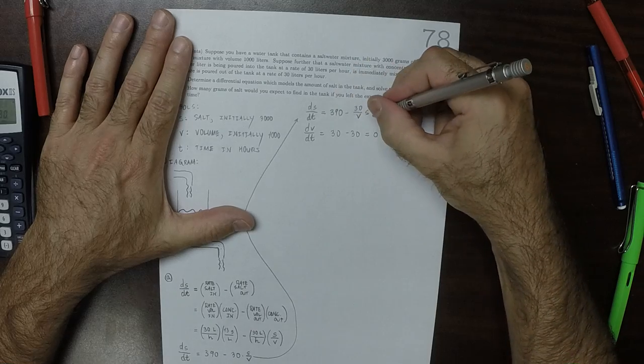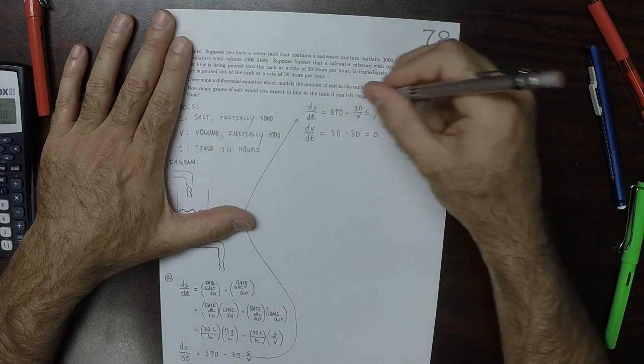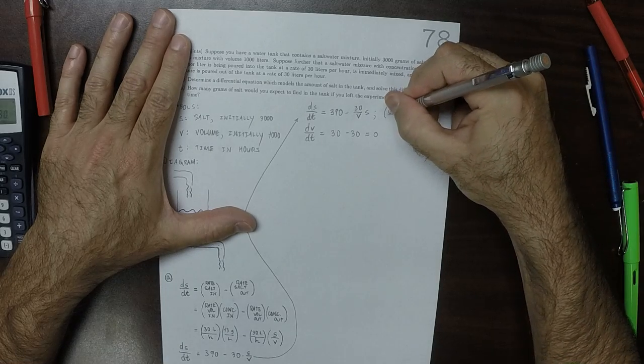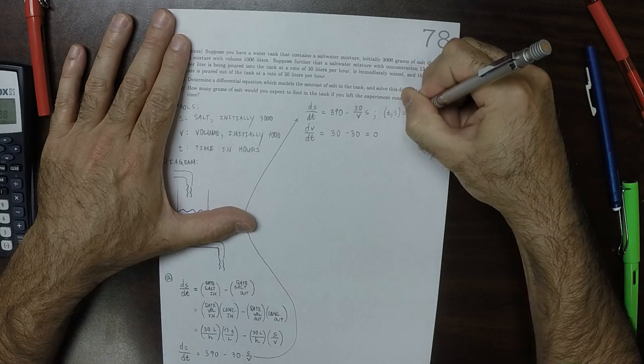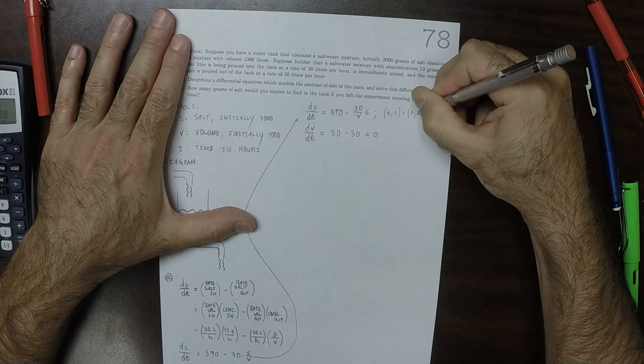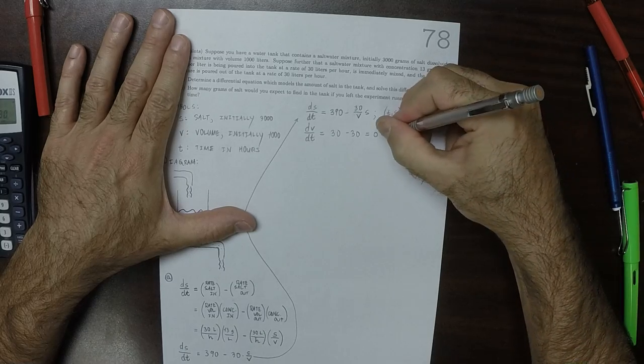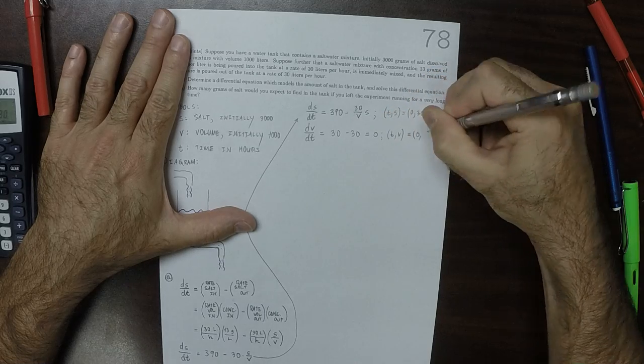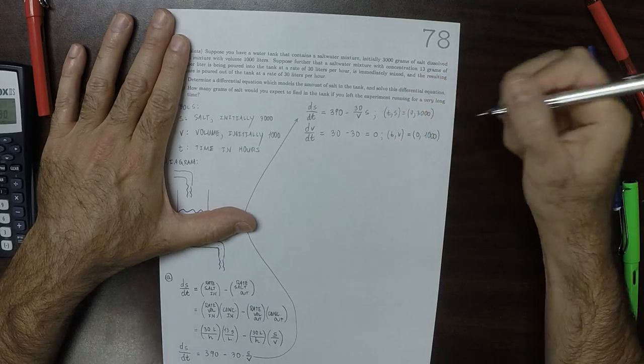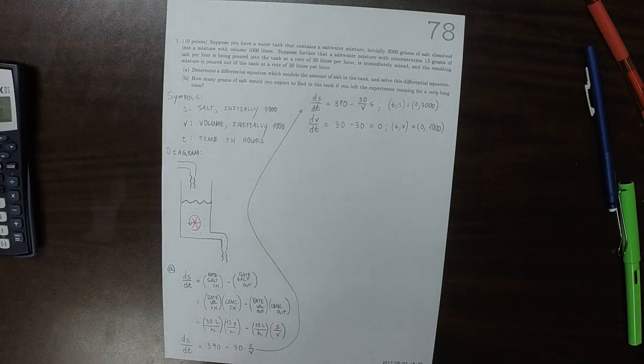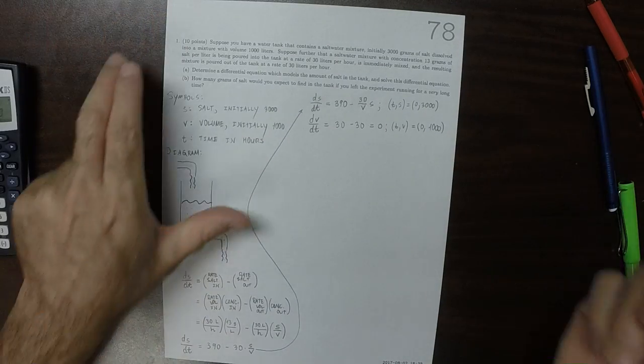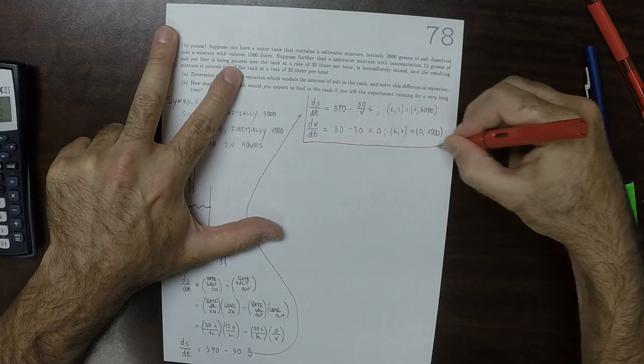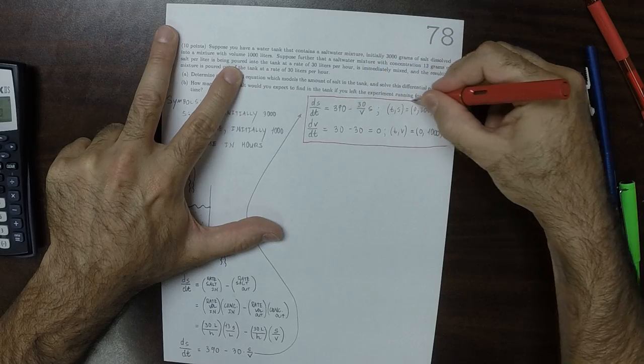And then the initial condition for this differential equation in S is that at T = 0, S = 3000 is the initial condition. And at T = 0, V = 1000 is the initial condition. So this is the solution. This is the differential equations which must be satisfied.